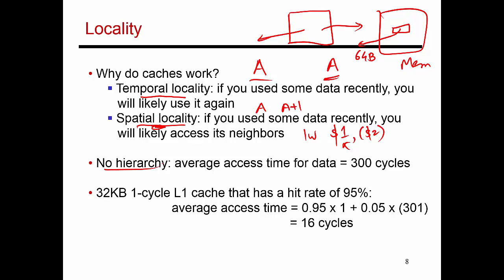If I did not have any kind of cache hierarchy, if I was doing a load and had to always get data from memory, every single data access is going to cost me 300 cycles. That's really slow. That means every load is introducing roughly 300 stall cycles.